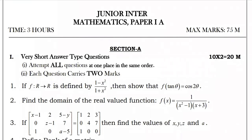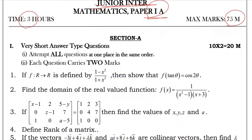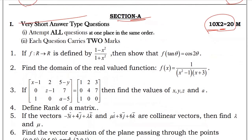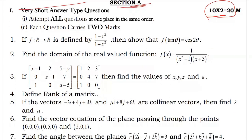Hi hello everyone, my name is Ananda. I'm presenting Junior Inter Mathematics Paper 1A: 75 marks, 3 hours duration. Section A has very short answers, total 10 questions, each one carries 2 marks for 20 marks total. All questions in this section must be answered.